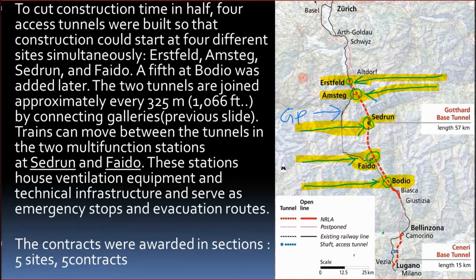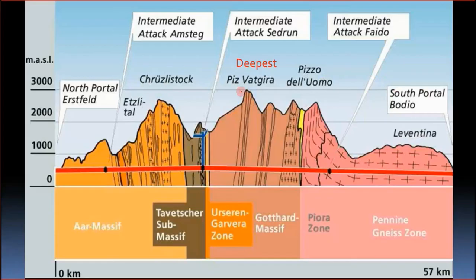The main construction was divided into five sections or lots. The 57-kilometre tunnel was excavated from five different starting locations. Some construction was done using dynamite and some using tunnel boring machines (TBMs). The green arrows show the direction of excavation — yellow for east, blue for west. This is the longitudinal geological profile of the tunnel.